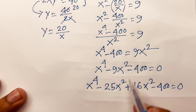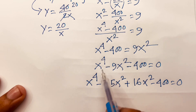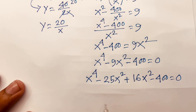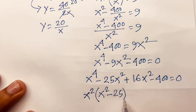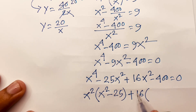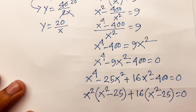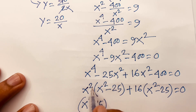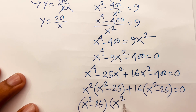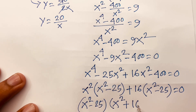Factoring: x²(x² − 25) + 16(x² − 25) = 0. So (x² − 25) is common, giving (x² − 25)(x² + 16) = 0.